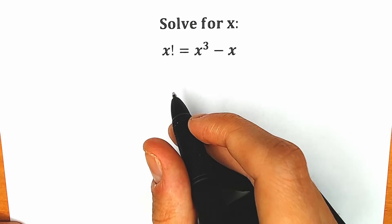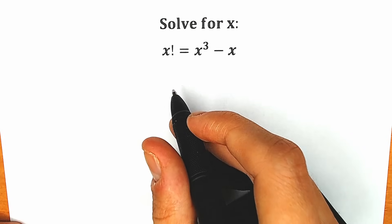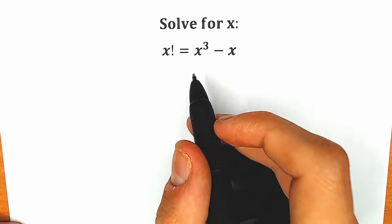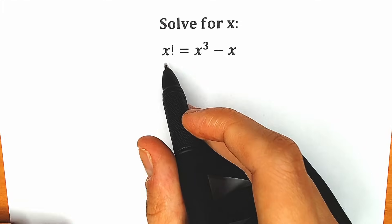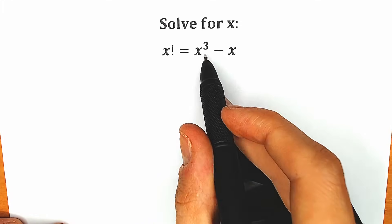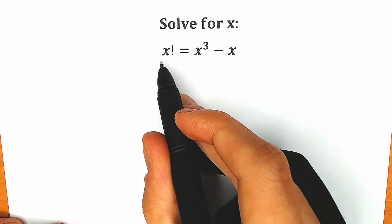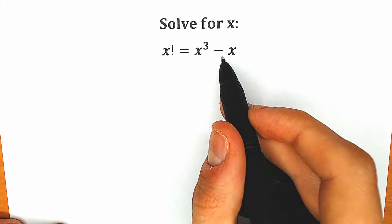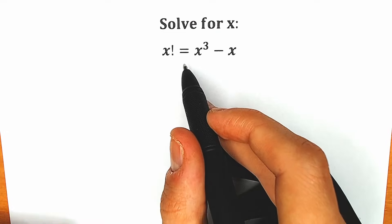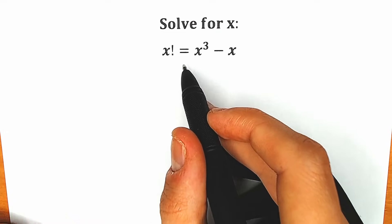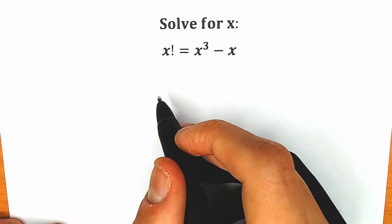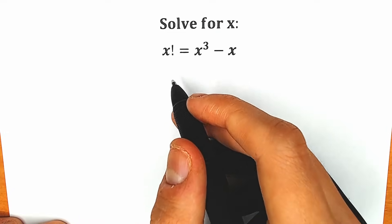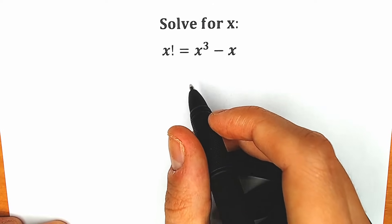Hello everyone, welcome back to my channel. Today we have a very interesting Olympiad question — a mixture of factorial and a cubic function. We have x factorial equal to x cubed minus x, and we need to find x. If you have your solution, you can write it down in the comment section, and in a few seconds we will check our answers.